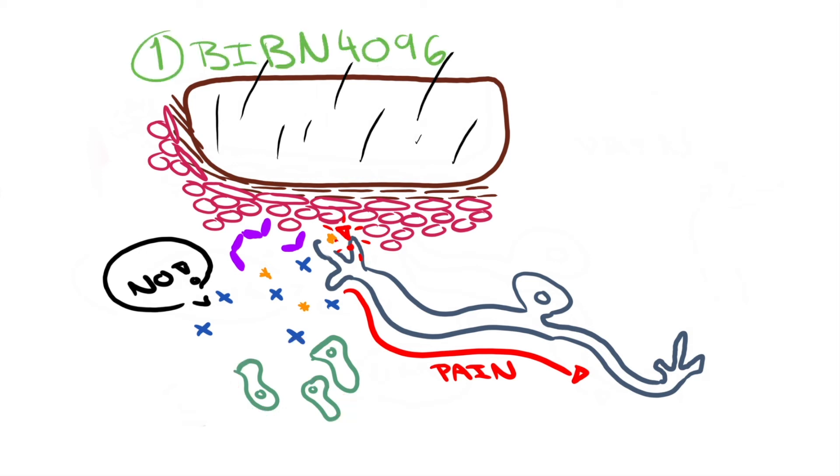The first treatment uses a molecule that shuts down the CGRP signal going from the neurons to the immune system. This molecule is called BIBN-4096, and similar drugs are being used to help with migraines.